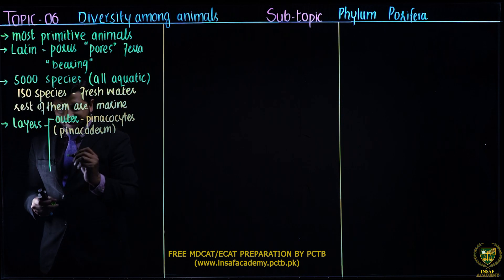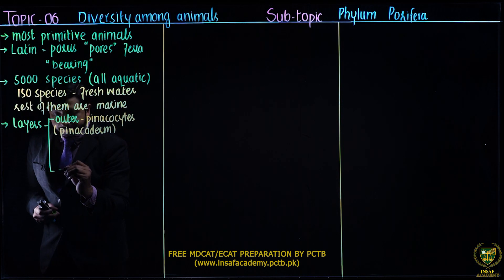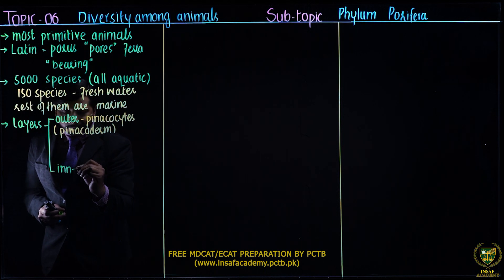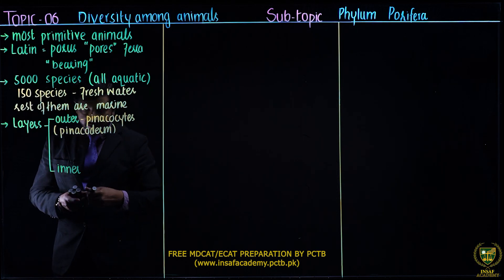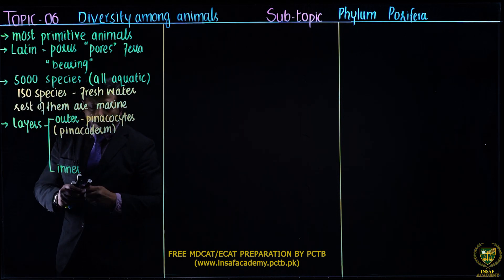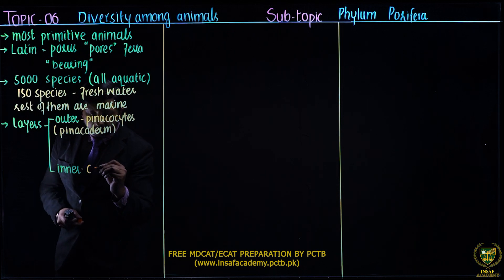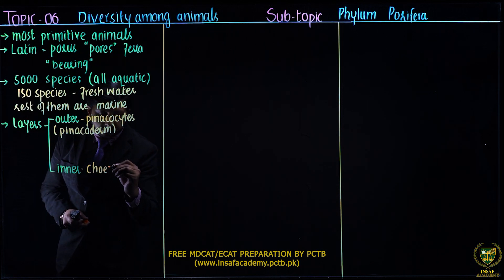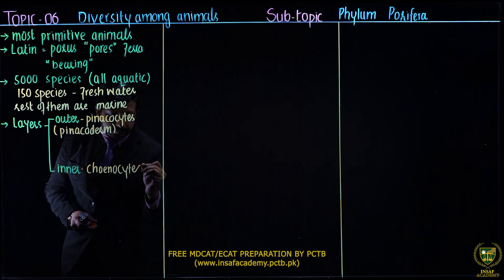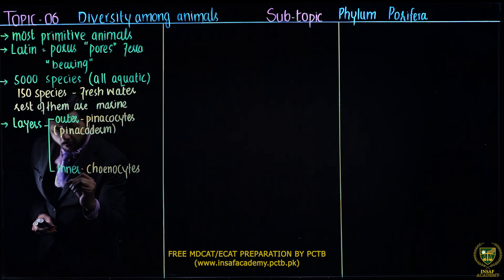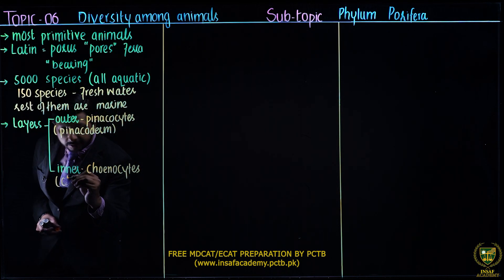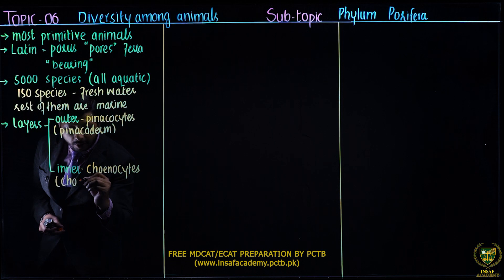The inner layer is made up of choanocytes, and this forms the choanoderm.